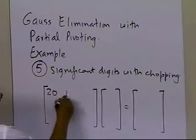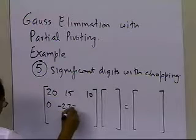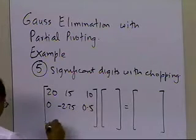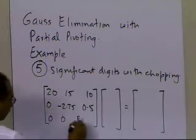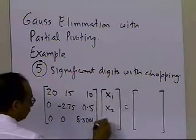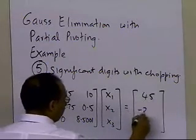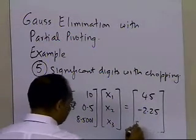We had 20, 15, 10, 0, minus 2.75, 0.5, 0, 0, 8.5, 0, 0, 1, times x1, x2, x3, and we had 45, minus 2.25, and 8.5001.